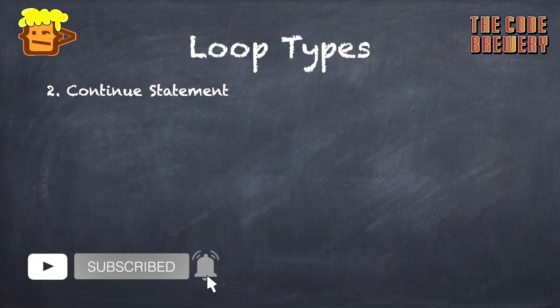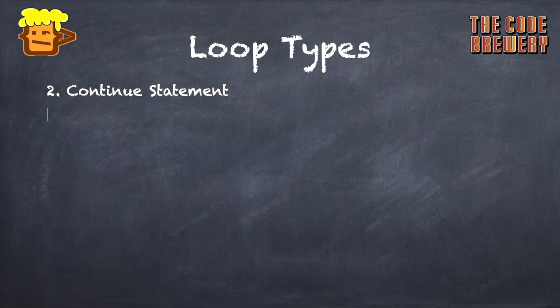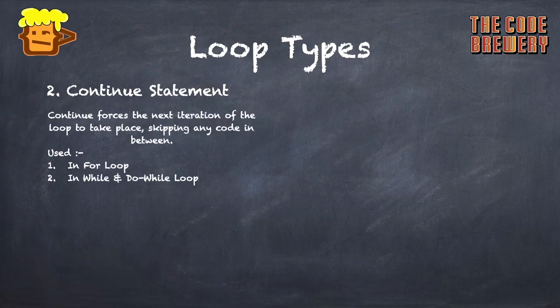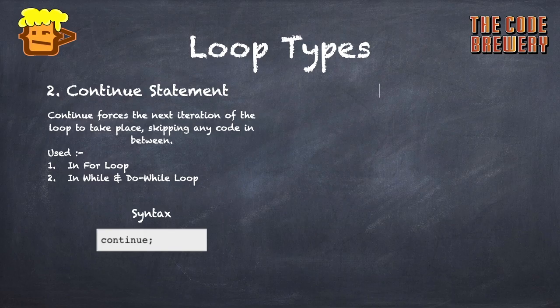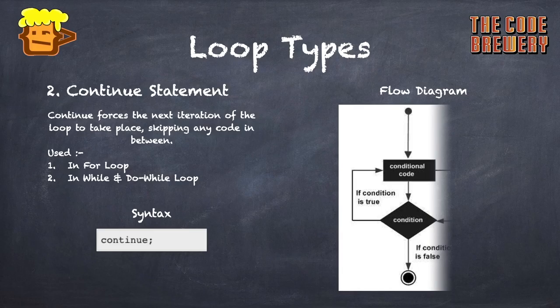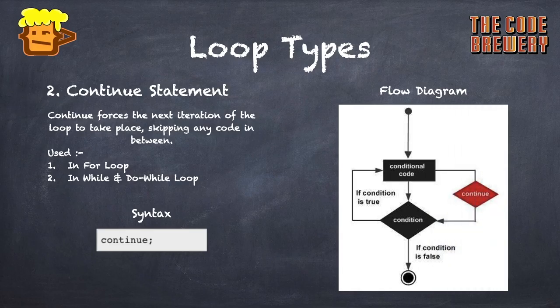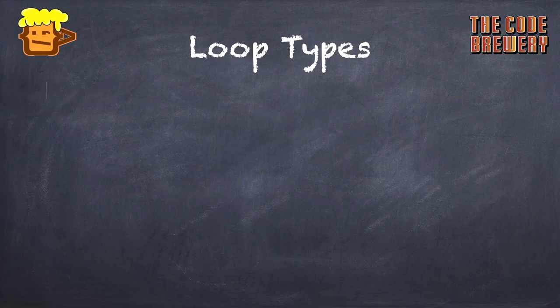The second type is the continue statement, used in some other cases. It causes the next iteration of the loop to take place, skipping any code in between. It is used in for loops, do-while loops, and while loops. The syntax is simply: continue. From the flow diagram, when continue is encountered and the condition is met, it goes back and iterates again.